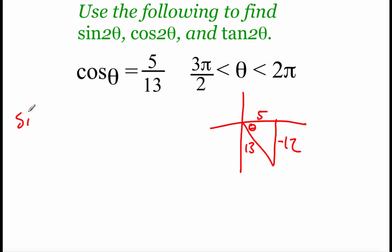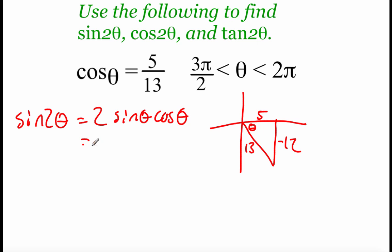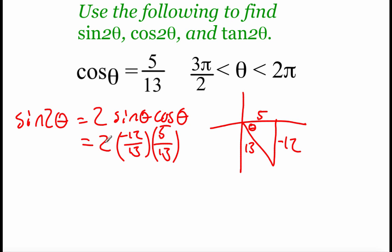For the sine of 2 theta, our formula says that's 2 times the sine of theta times the cosine of theta. Filling in from our triangle: the sine would be negative 12 over 13, and the cosine is 5 over 13. So this becomes one big multiplication problem. Taking 2 times negative 12 over 13 times 5 over 13, we end up with negative 120 over 169.